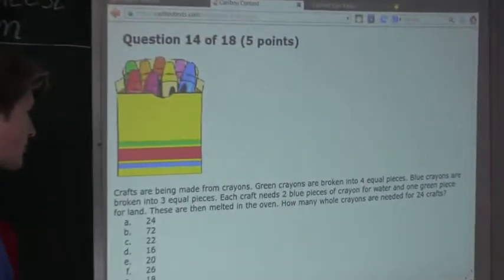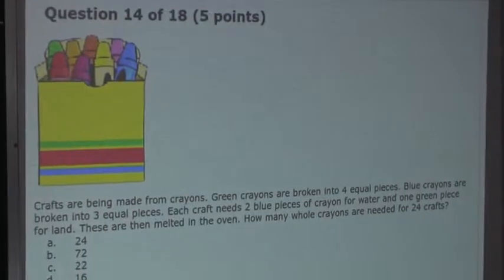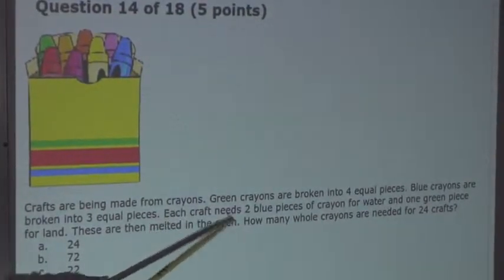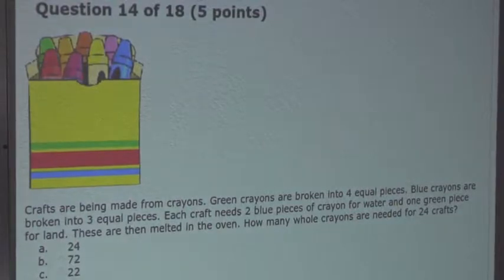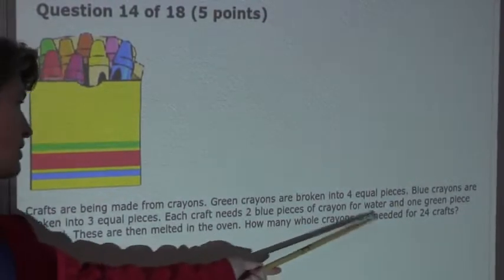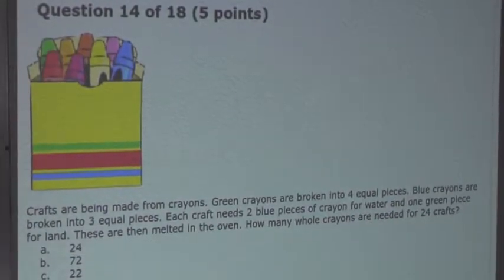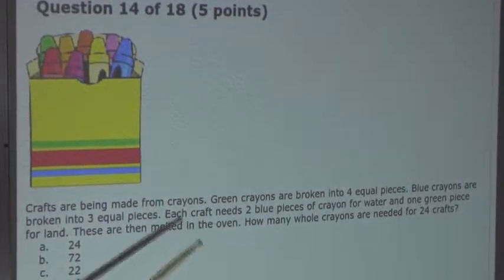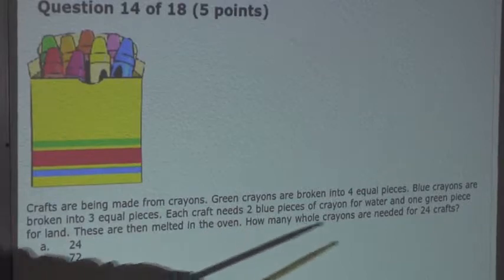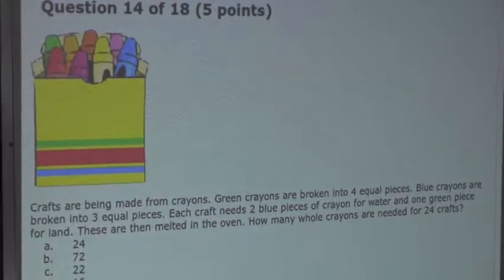Now let's look at the information for green crayons. It says each craft needs one green piece. And finally we know that there are 24 crafts. So therefore we must do 24 times just the one because it's just one green piece.